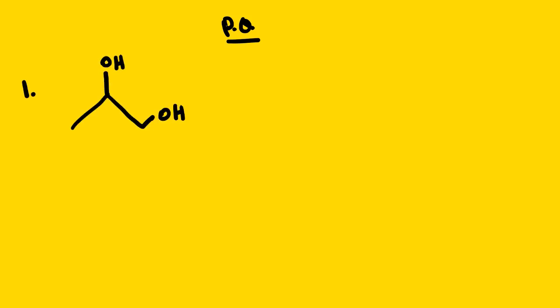We have a structure where we can see that we have a hydroxy group — an alcohol. This belongs to alcohol, but in this case we have two alcohols. This type of molecule we normally call a di-alcohol, or we can say they are glycols. So how do we name this?